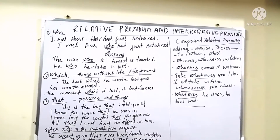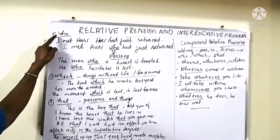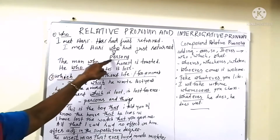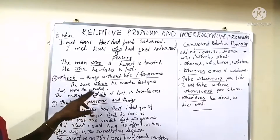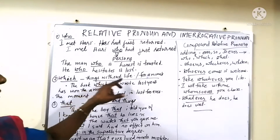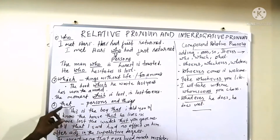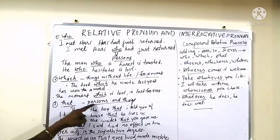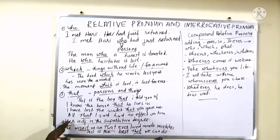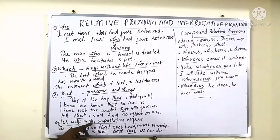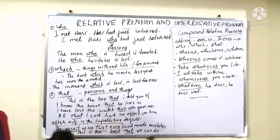So the relative pronouns we studied are: 'who' for persons, 'which' for things without life and for animals, and 'that' for persons and things. 'That' is also used after adjectives in the superlative degree.